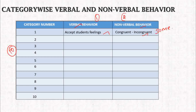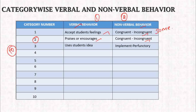The second category is when a teacher praises or encourages the student — for example, saying 'good,' 'very good,' or 'excellent.' The non-verbal behavior for category two is again congruent or incongruent. The third category is when the teacher uses the student's idea. The non-verbal behavior for category three is 'implementory' or 'perfunctory' — perfunctory meaning done quickly with no real interest.